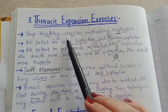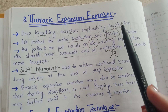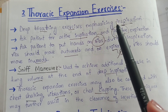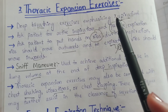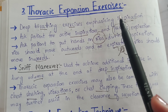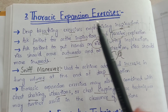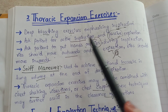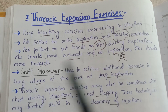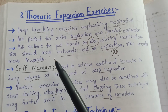The next component is thoracic expansion exercises — deep breathing exercises emphasizing inspiration. In thoracic expansion exercises, we ask the patient to actively inspire and passively expire; inspiration is done deeply. Normally expiration is passive, but we apply force to achieve deep inspiration. We also ask the patient to place hands on the ribs during inspiration; ribs should move outwards and on expiration ribs should move inwards.